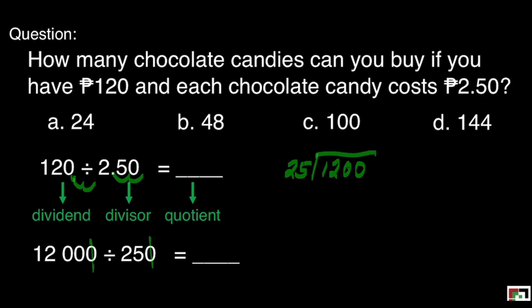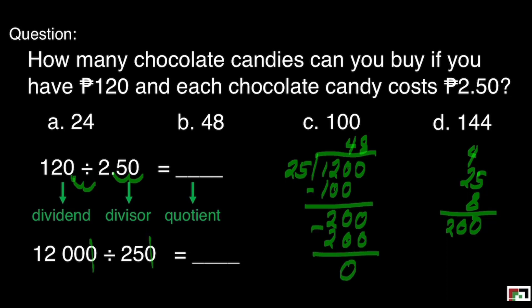How many 25's are there in 120? We will have 4. 4 times 25 is 100. Then we can subtract. We get 20. And we bring down 0. How many 25's are there in 200? I think it's 8. 8 times 25 is 200. Then subtract. We get 0. Our answer for this question is letter B. It means you can buy 48 chocolate candies if you have 120 pesos.